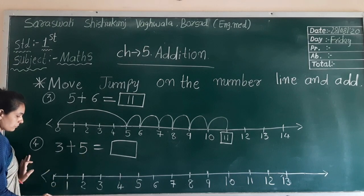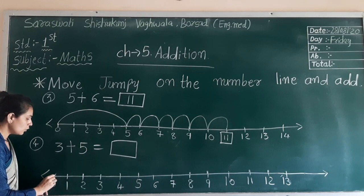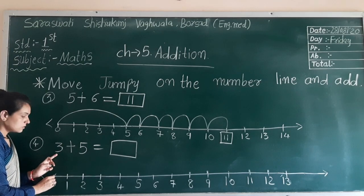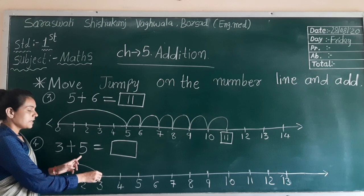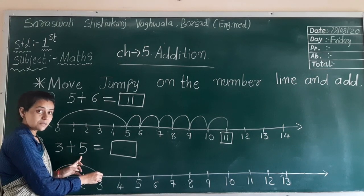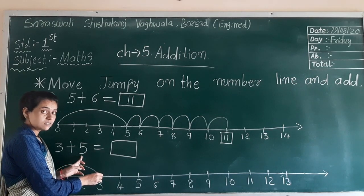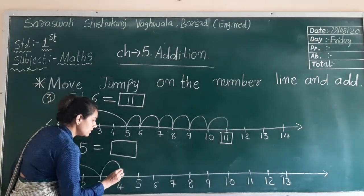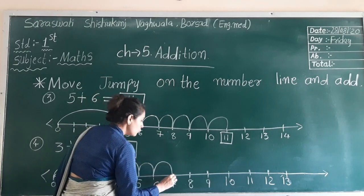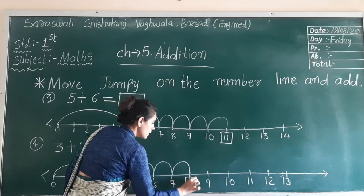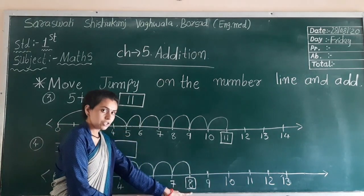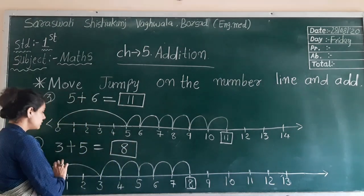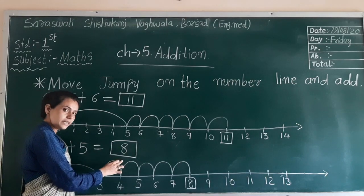Next, fourth number: 3 plus 5. First you have to go with 0, here first 3, so go with 3. Here 5, so how many steps you have to take? 5 steps, right. So 1, 2, 3, 4, 5. What is your answer? 8. So you have to write 8 here. 3 plus 5 equals 8.